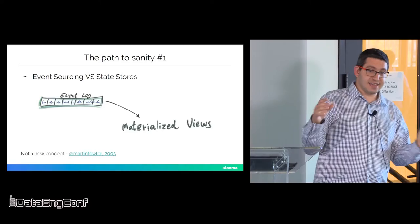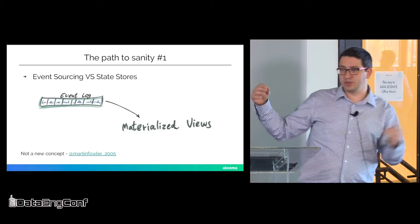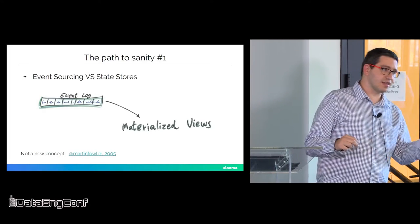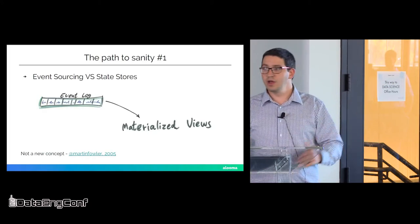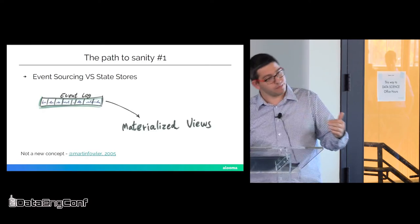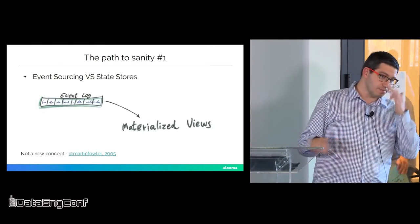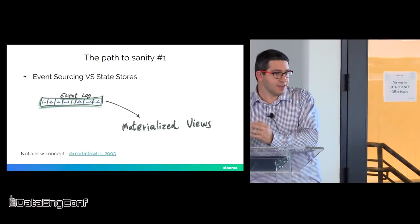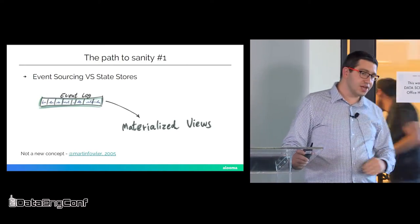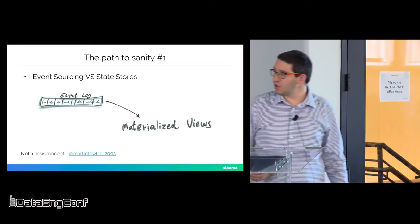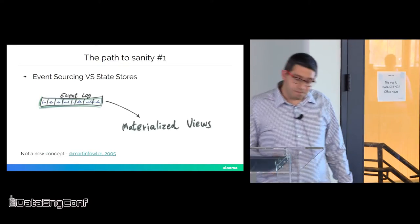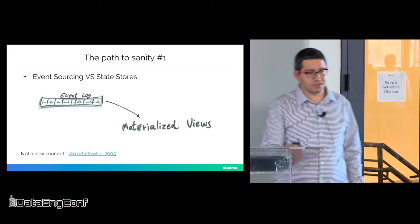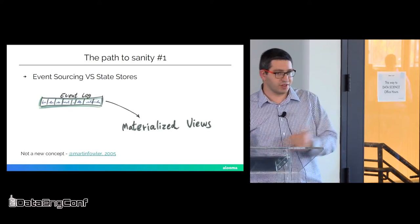And it is very useful in case of failures. Because again, the state, the materialized view of the state or the representation of the table, for example, can be recalculated again and again from the source data, always. And if it's heavy processing, you can always just save intermediate states. But you can always recalculate everything from beginning while having this event log. So the path to sanity number one is use an event log and materialize the views for this event log every time.